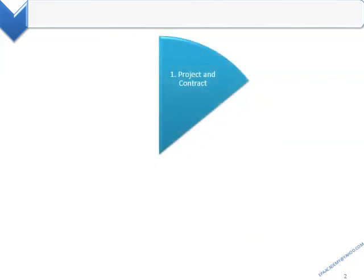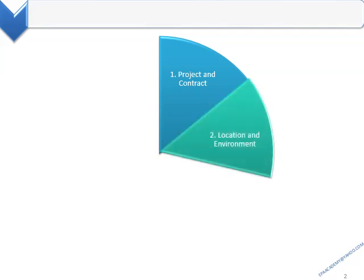Project and contract causes are: project size, scope, duration, and budget. Complexity. Project type — hospital, warehouse, commercial, or residential. Regulations and building codes. Multiple contracts. Contract type. Construction methods. Special requirements.